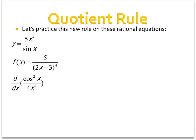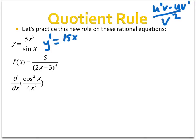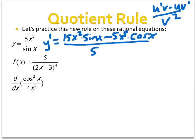Let's practice the quotient rule: u prime v minus u v prime over v squared, where u is the upper function and v is the lower function in any fraction. So u prime — the derivative of the top — is 15x squared. Leave the bottom alone. Minus, leave the top alone, times the derivative of the bottom — the derivative of sine is cosine — over the bottom one squared: sine of x squared. It's usually not necessary to simplify these equations.